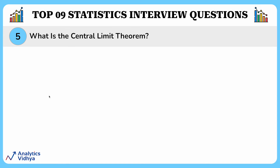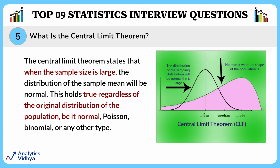The next question asks what the central limit theorem is. The central limit theorem states that when the sample size is large, the distribution of the sample mean will be normal. This holds true regardless of the original distribution of the population, be it normal, Poisson, binomial, or any other type. In simple terms, when you collect many samples from any population, the average of these samples tends to follow a normal distribution, making it easier to make predictions and understand patterns in data. The CLT is a fundamental concept in statistics.